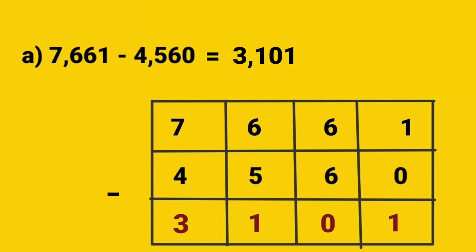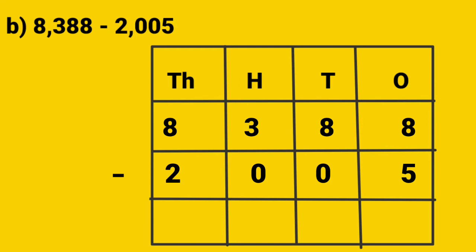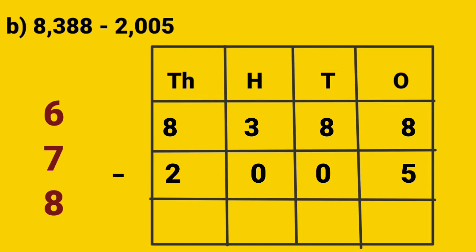Now we will see B: 8,388 minus 2,005. Now let's see the answer. First we have to subtract from the 1's place: 8 minus 5. Now we can subtract 5 from 8, so the answer is 3. Move to the 10's place: 8 minus 0, so 8 minus 0 is equal to 8.